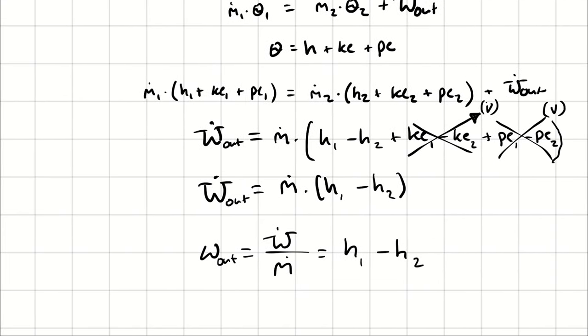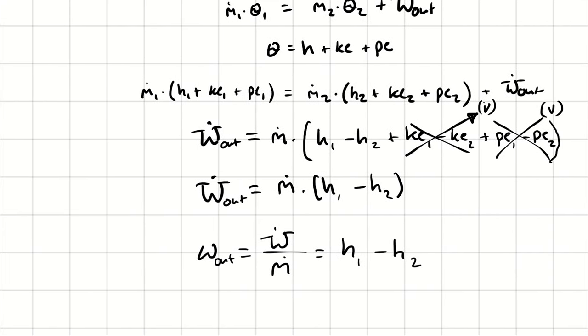For a turbine, the ideal work is going to simplify down to H1 minus H2. Therefore, when I'm comparing the actual work to the ideal work, what I'm comparing is the delta H's.